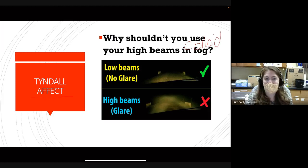That's why if you have fog lights, they're considered low beams and they hit lower. And you can see that you have a clearer picture compared to our high beams on the top part.